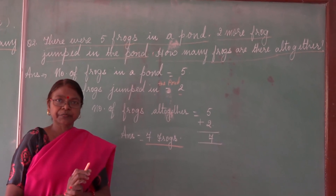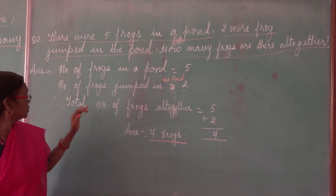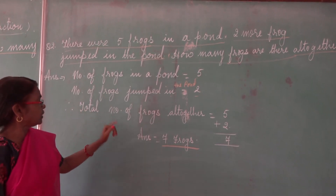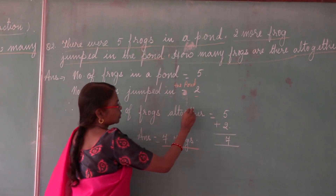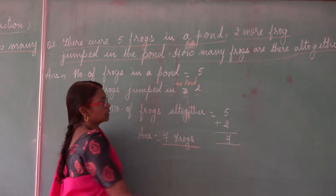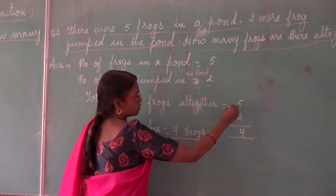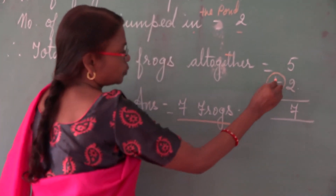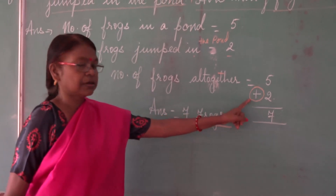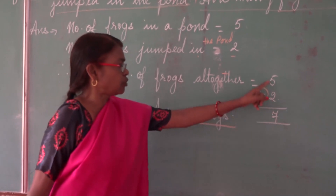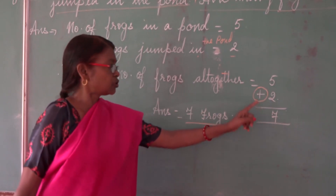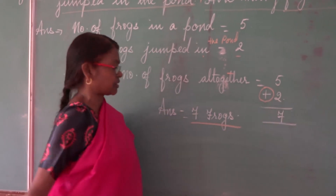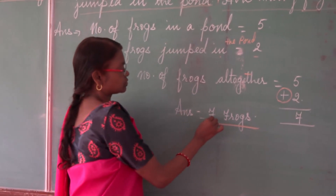Clear, everyone? So therefore — put the three dots — Total number of frogs all together is equal to five plus two. You have to put the sign there; without the sign nobody will know whether you added or subtracted. The sign is very, very important. Five plus two is equal to seven. Answer is equal to seven frogs.